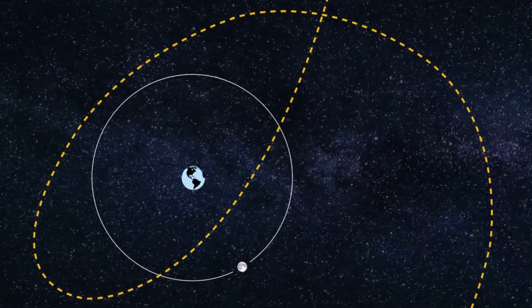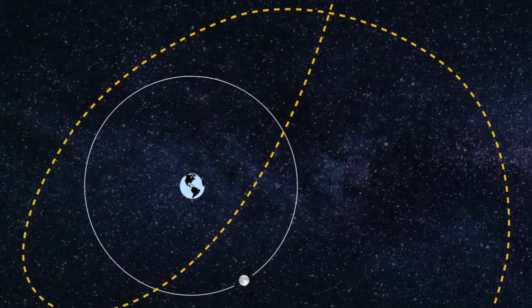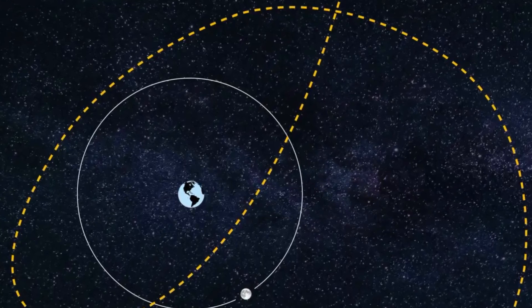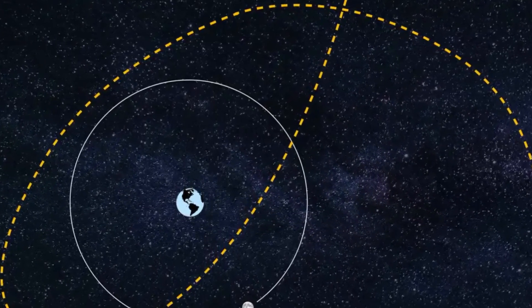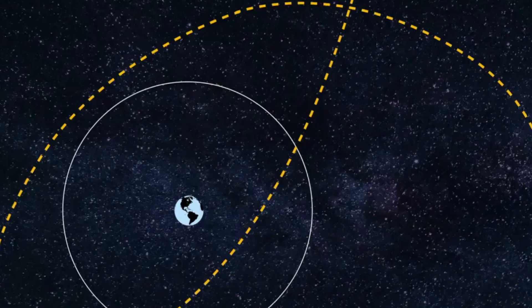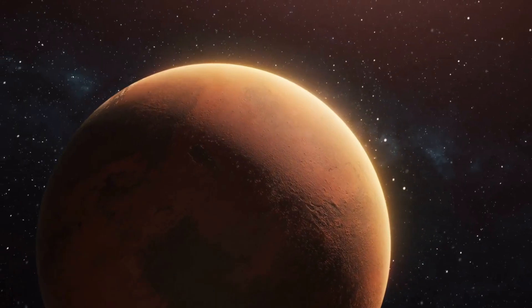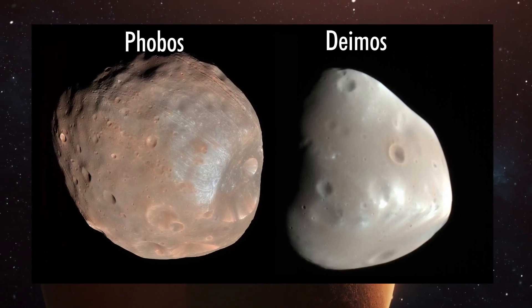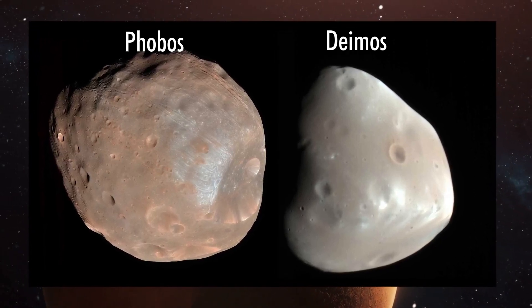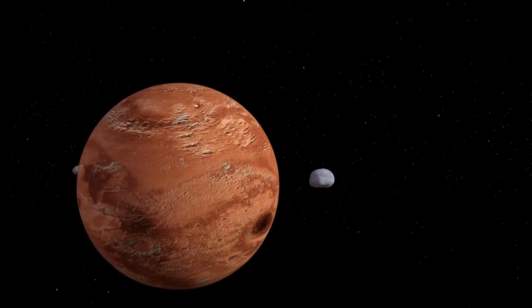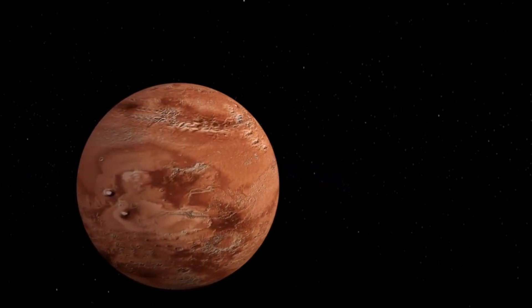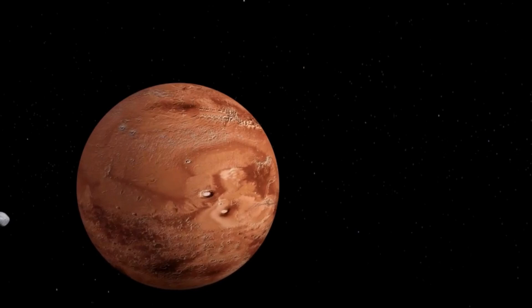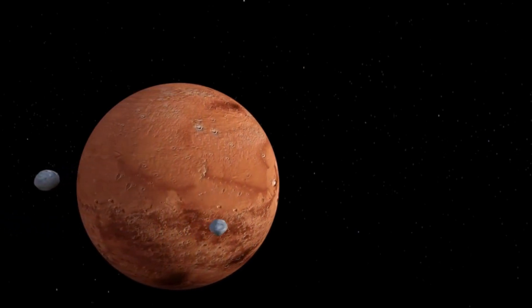Even though PT5 will only be with us for a brief period, its presence is noteworthy and could provide insights into a long-standing enigma surrounding our neighboring planet, Mars. The two moons of Mars, Phobos and Deimos, have intrigued scientists for years due to their peculiar shapes, diminutive sizes, and erratic orbits. By studying mini-moons like PT5, researchers hope to uncover clues that could explain the origins and characteristics of these Martian satellites, potentially reshaping our understanding of how such celestial bodies form and evolve.